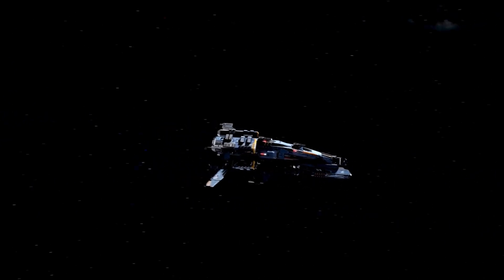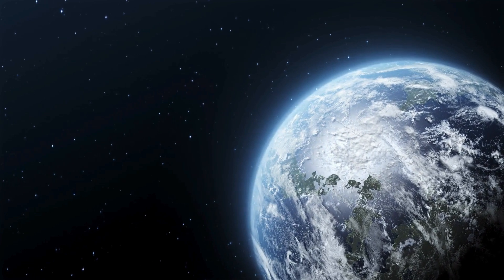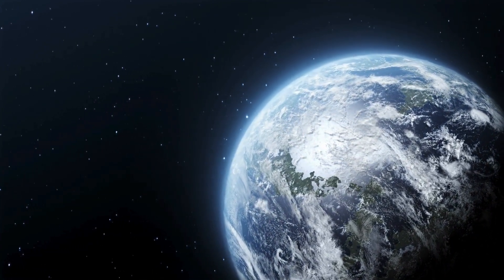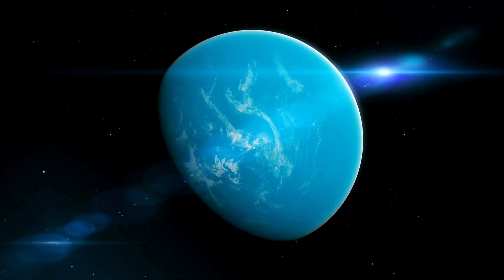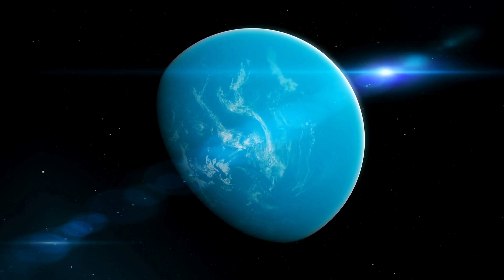Among them, Proxima Centauri b stands out as a truly astonishing and bewildering planet. With a year lasting just 11.2 Earth days, its distance from its star is much closer than Earth's distance from the Sun. This means that one side of the planet is perpetually bathed in light, while the other remains in eternal darkness.